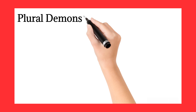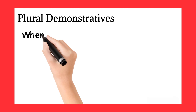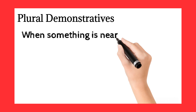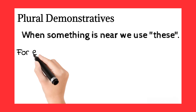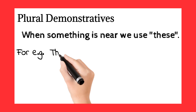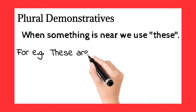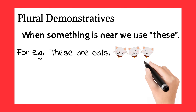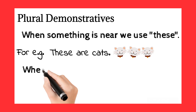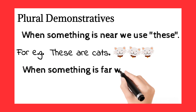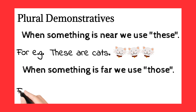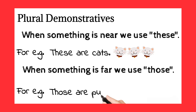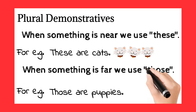Let's see plural demonstratives. When something is near, we use 'these'. For example: these are cats. When something is far, we use 'those'. For example: those are puppies.